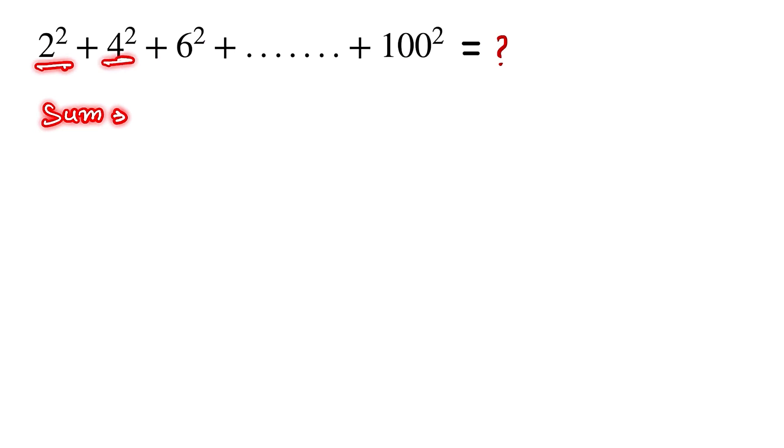We have to find the sum of this given series. Here 2² is written as 4, plus 4² is written as 16, and 6² is written as 36, plus this goes to 100² which is equal to 10,000.